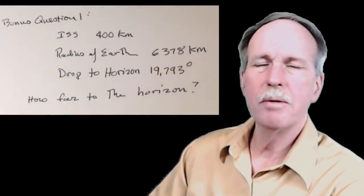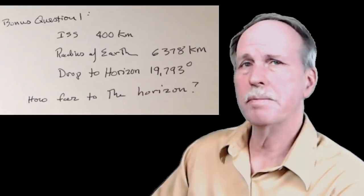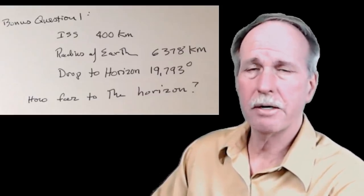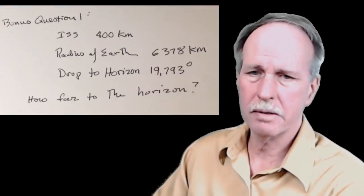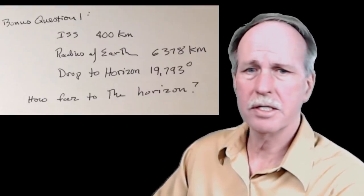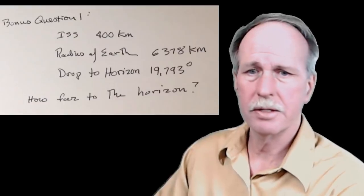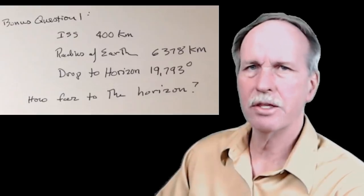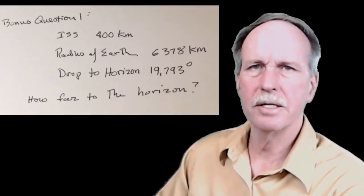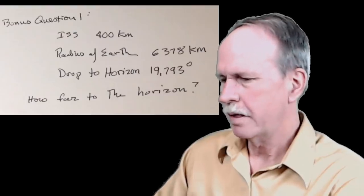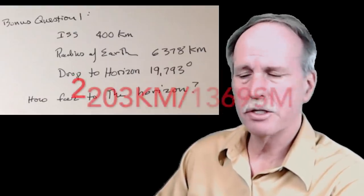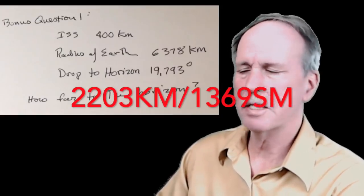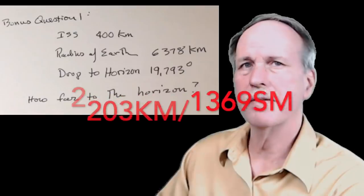Okay, now the moment you've all been waiting for. The answers to the bonus question. Bonus question number one. If the International Space Station orbits at an altitude of 400 kilometers, and the radius of the earth is 6,378 kilometers, the drop to the horizon is 19.793 degrees. How far is the horizon? Well, the correct answer is 2,203.346 kilometers, or 1369.373 miles.